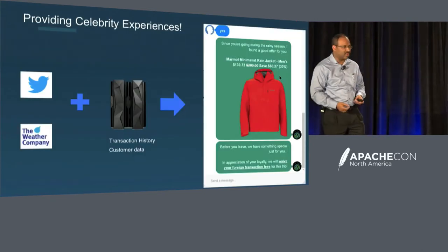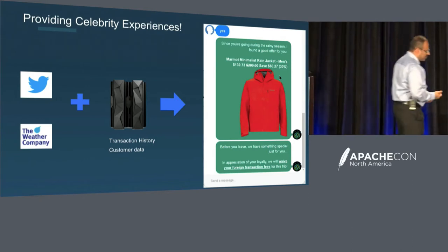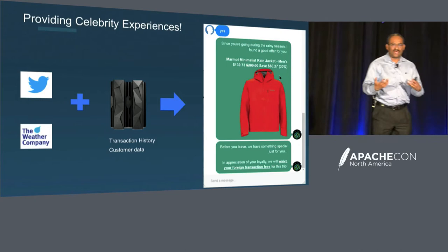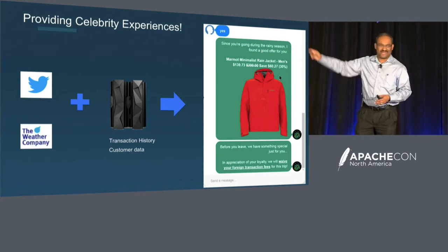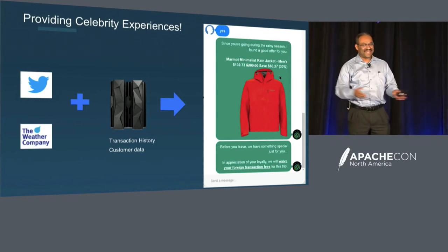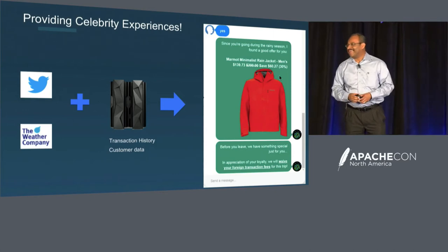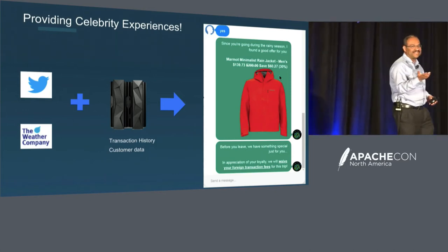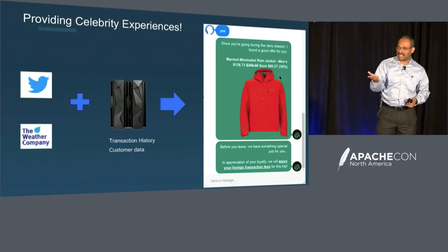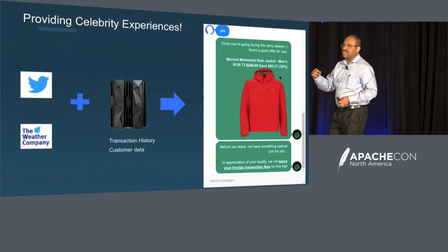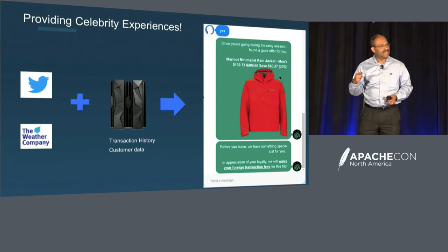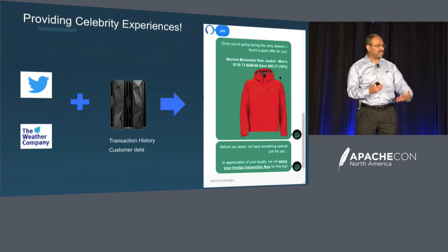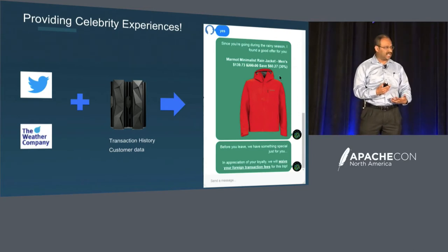The next one is another interesting use case — what we call a celebrity experience. The idea is that you have core transactional data — and by the way, that's a mainframe on the slide. It's an IBM keynote, I've got to put a mainframe up there somewhere. But all kidding apart, this is where most enterprises have their core transactional data. The question is: how will you use that data in new and interesting ways? You've got transactional history, you've got credit card transaction data, volumes of it.